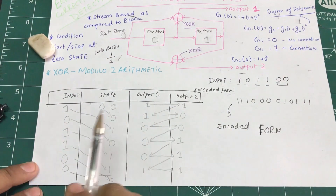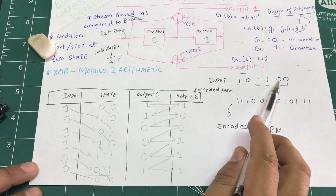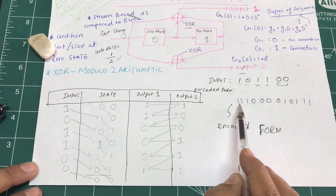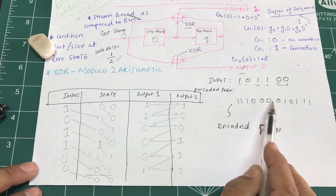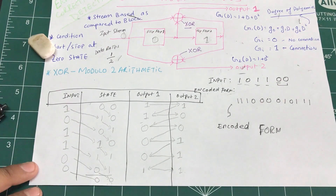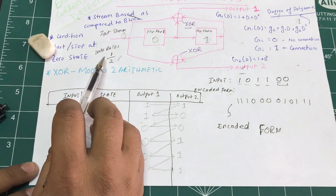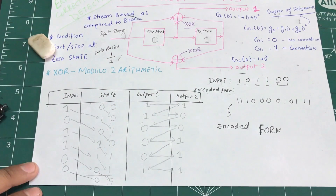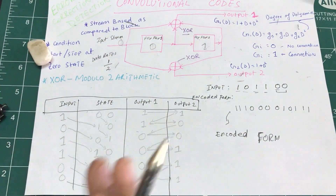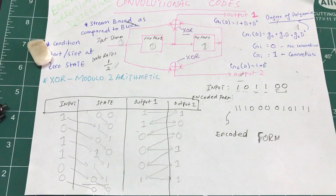As you can see, the input was six bits (four data bits plus two appended zeros) and the output is twelve bits — exactly double. This confirms the data rate of one-half: you get twice as many bits out using convolutional codes. I hope you enjoyed this tutorial. If you have questions, ask in the comments, and don't forget to subscribe.